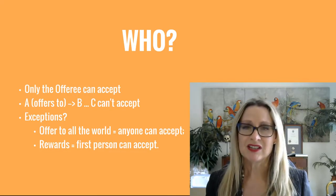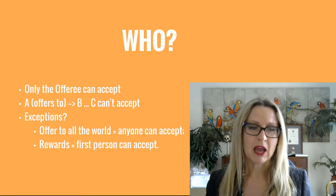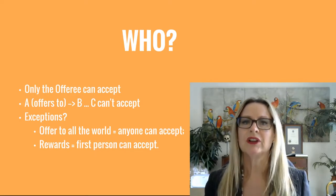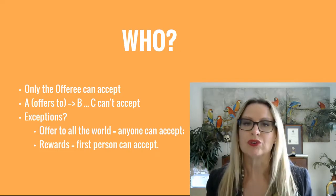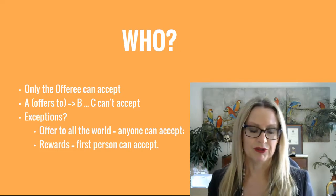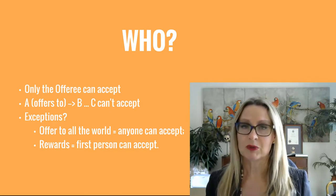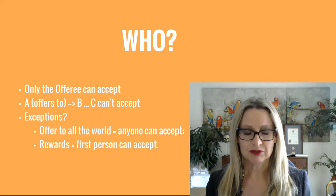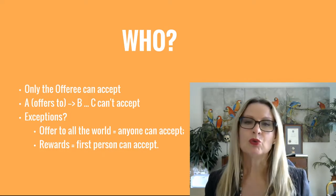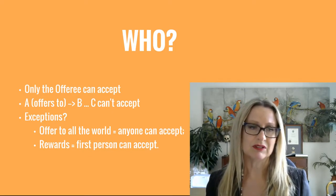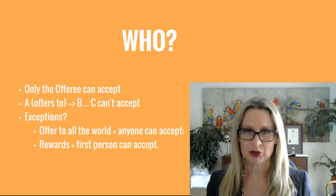What are the exceptions here? Principally, they relate to those unilateral type contracts where one person is broadcasting an offer broadly. In those circumstances, like we saw in Carlill, anyone can accept. In a reward situation — a more particular subset of offers to the world — it's intended that only the first person is going to be able to accept.